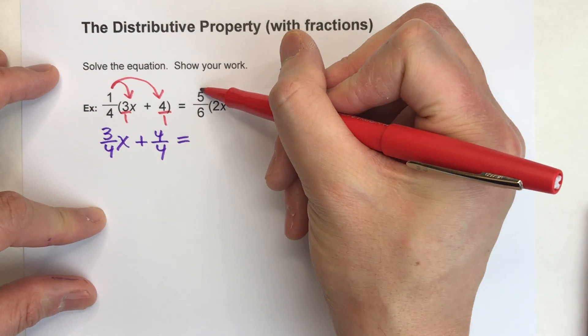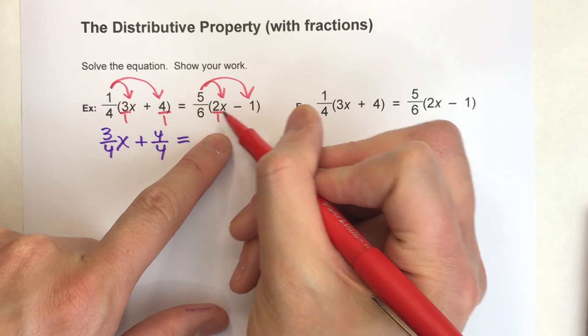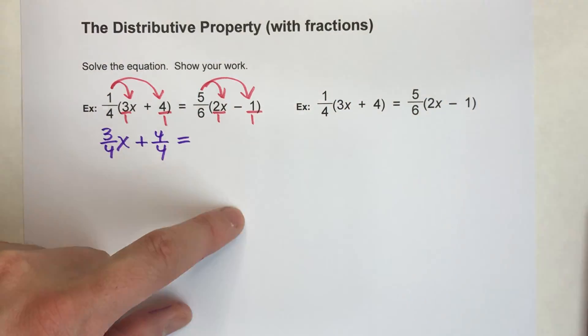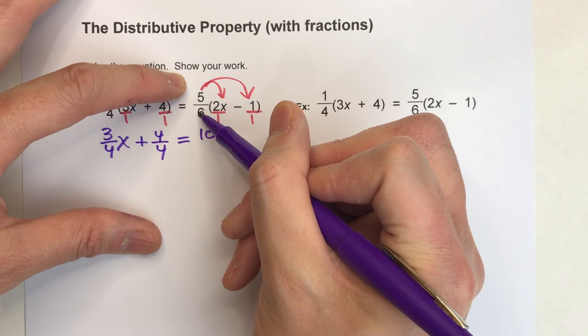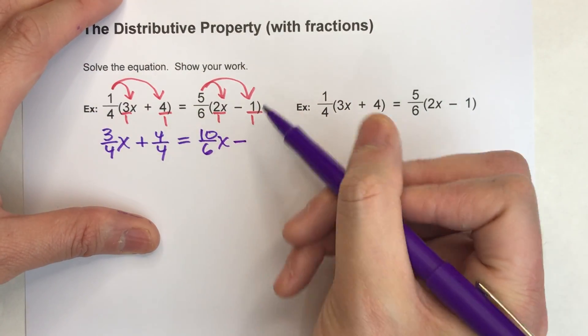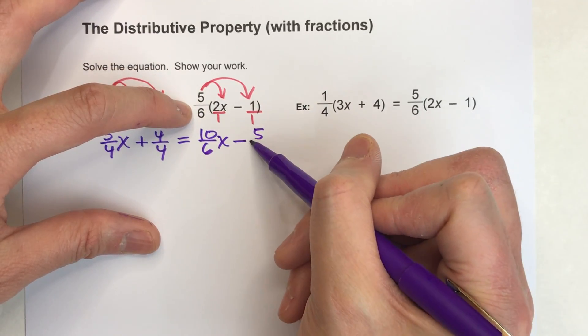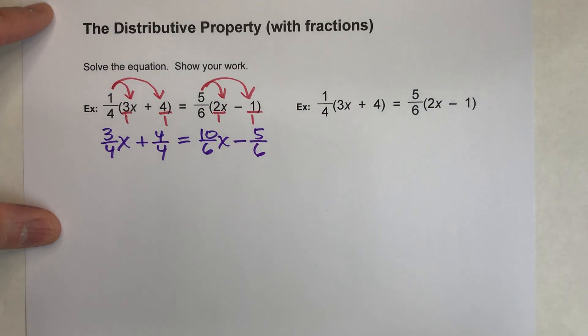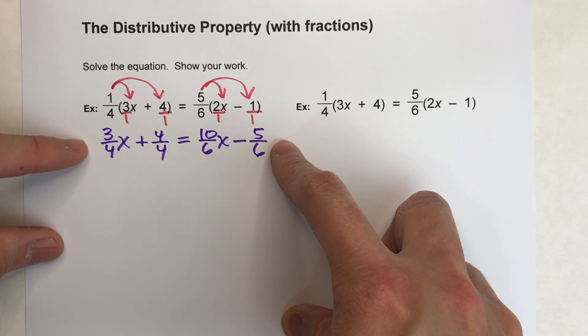On the other side, we're going to multiply everything in parentheses by 5/6. And again, I'm going to put these over 1, because we're multiplying them by a fraction. So 5 times 2 is 10, 6 times 1 is 6, x minus 5 times 1 is 5, and 6 times 1 is 6. Alright, so I've used my distributive property, now there's no more parentheses.